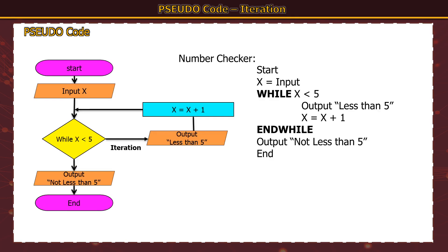Now I've taken the iteration flowchart from earlier and converted it to pseudocode. The program starts, input x — entering 0. While 0 is less than 5: output 'less than 5', x equals x plus 1 giving 1. Back around: 1 is less than 5, output, x becomes 2; 2 less than 5, output, becomes 3; 3 less than 5, output, becomes 4; 4 less than 5, output, becomes 5. Now 5 is less than 5 is false, so it jumps to 'end while' and outputs 'not less than 5'. That is the basic overview of how pseudocode and flowcharts are presented.